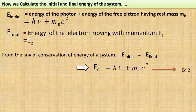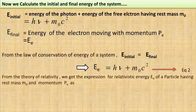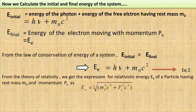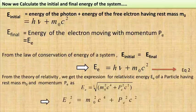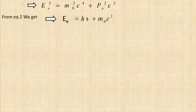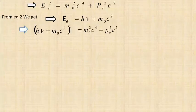From the theory of relativity, the relativistic energy of a particle with rest mass m₀ and momentum p is E = √(m₀²c⁴ + p²c²). Squaring both sides gives E² = m₀²c⁴ + p²c². From equation 2, E = hν + m₀c², so substituting: (hν + m₀c²)² = m₀²c⁴ + p_e²c².